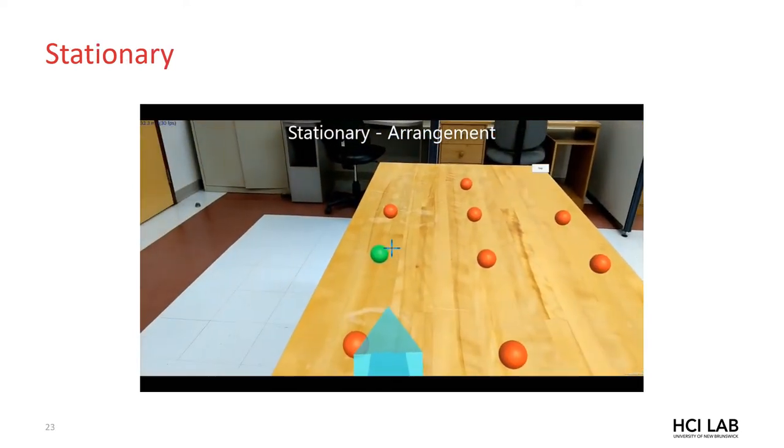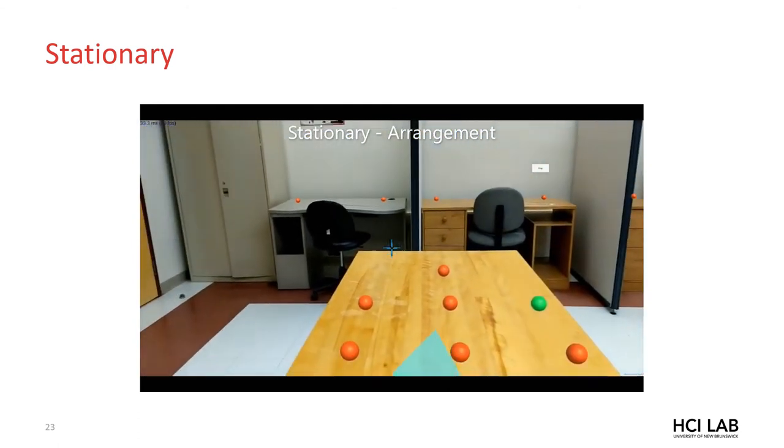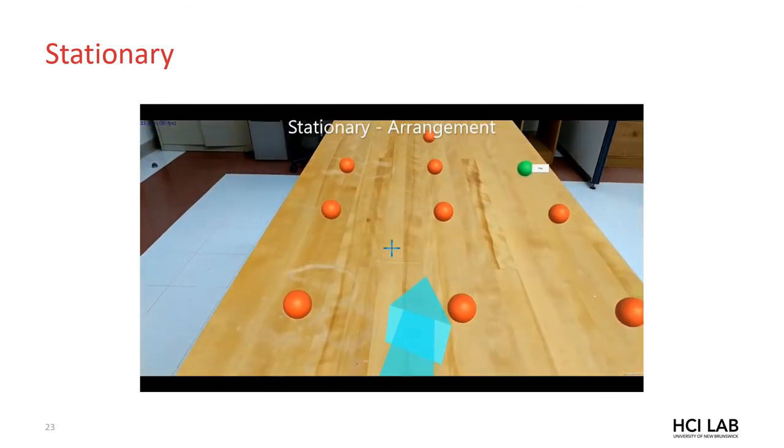Stationary or stationary distance provides targets that are placed both near and at a distance from the user. Further targets are visually smaller, which means they're harder to acquire.